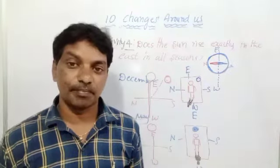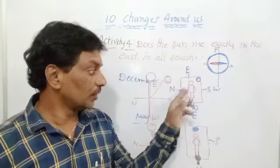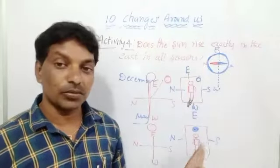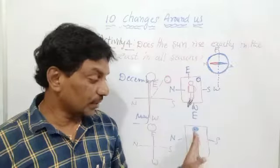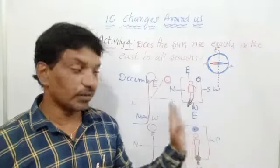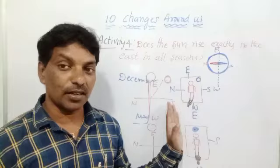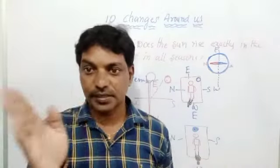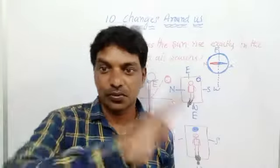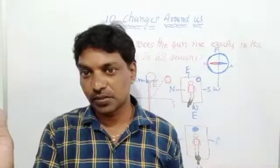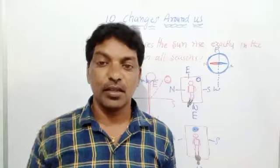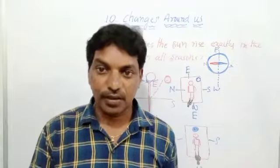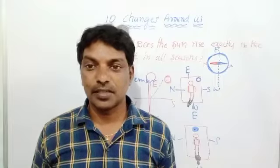The shadow is to his left in December because the Sun rises toward the south; the shadow is right behind him in May because the Sun rises toward the East. In December the Sun moves toward the south, in May it moves toward the East — that is the conclusion of this activity.